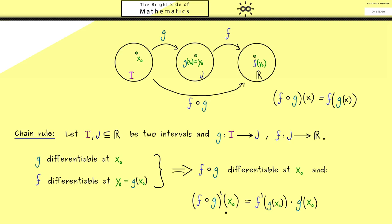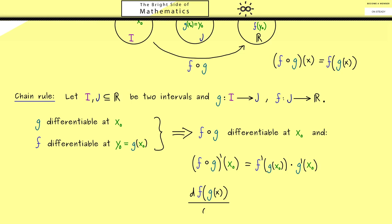Indeed this is one of the most important rules we have in calculus, simply because we often have such combinations of functions. Therefore you also often see this chain rule with another notation which might be easier to remember. There the derivative is written as d by dx, which means we also have to specify the point x₀ here. And usually this is done with a line on which we put x₀.